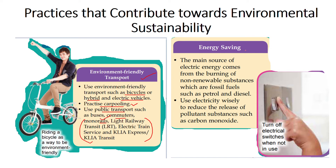The second major practice is energy saving. The main source of electric energy comes from burning non-renewable substances like fossil fuels, such as petrol and diesel. Using electricity wisely is very important to reduce the release of pollutant substances like carbon monoxide. The easiest and simplest thing we can do is to turn off electrical switches when not in use.